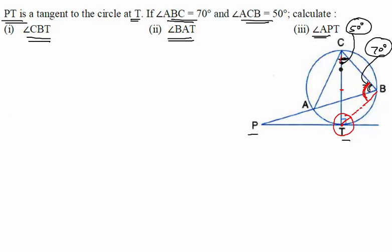If CT becomes the diameter, then angle CBT becomes an angle in the semicircle. Using the property that the angle in a semicircle is always equal to 90 degrees, we get the answer to the first question: angle CBT is equal to 90 degrees. Since we know angle CBT is completely 90 degrees and angle ABC is 70 degrees, the remaining portion should be 20 degrees. Maybe we can use it sometime.